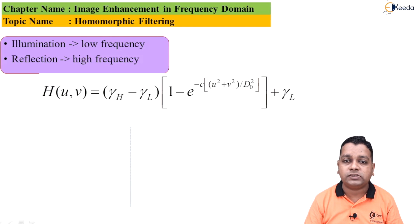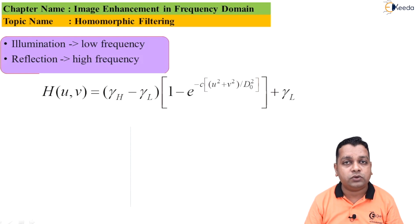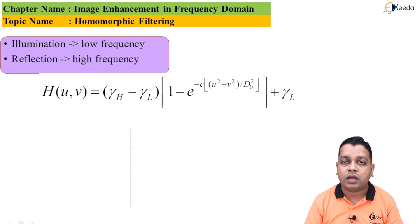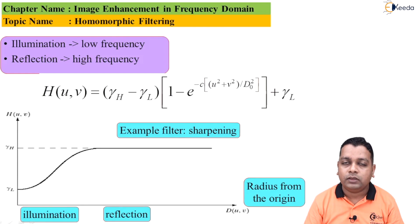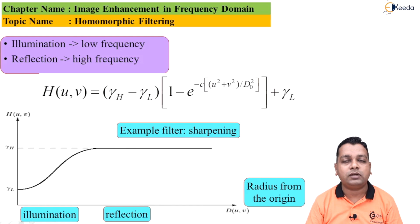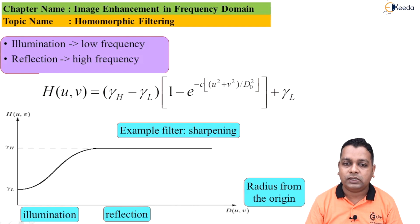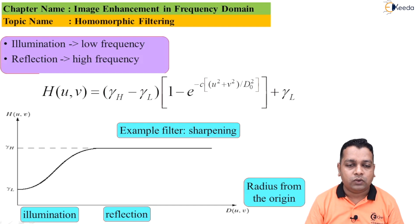The filter function H(u, v) in the Fourier domain is computed as: H(u, v) = (γ_h − γ_l) · [1 − e^(−c(u² + v²)/D₀²)] + γ_l, where γ_h and γ_l represent the high and low frequency gains respectively, c is a sharpness control parameter, and D₀ is the cutoff frequency. The graphical representation plots D(u, v) on the horizontal axis and H(u, v) on the vertical axis, showing γ_l and γ_h as the low and high frequency asymptotes.